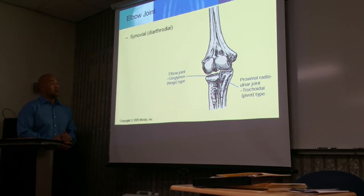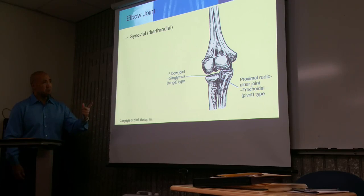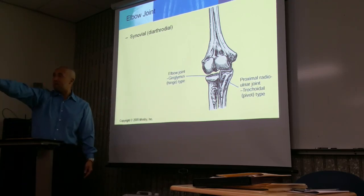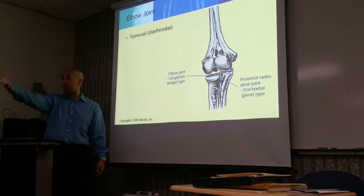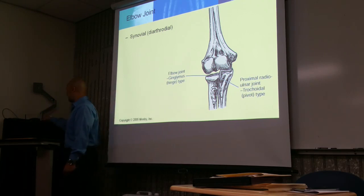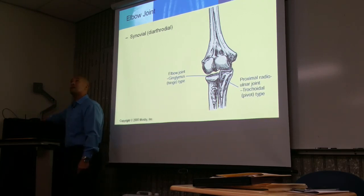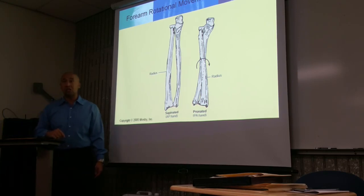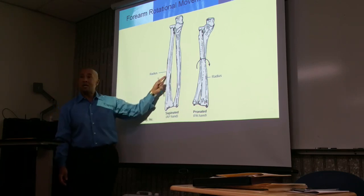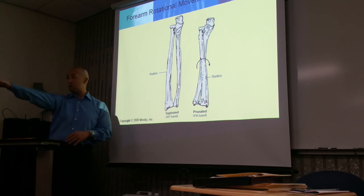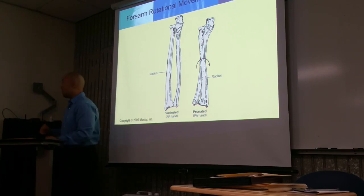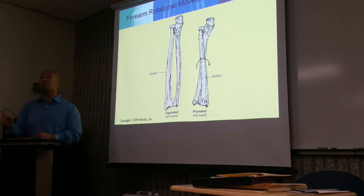The elbow is a synovial or diarthrodial joint — meaning it's freely movable. The elbow joint is both a hinge type and a trochoid or pivotal type, because you can bend it and also rotate your arm. When your hand is in a true AP projection — palm up — the radius and ulna are separated. When you pronate your hand, the two bones cross.